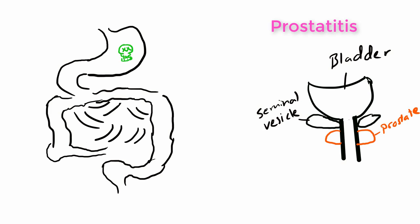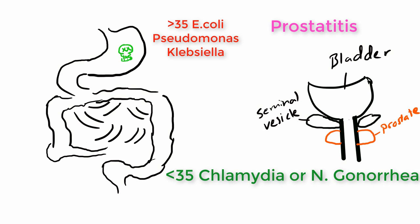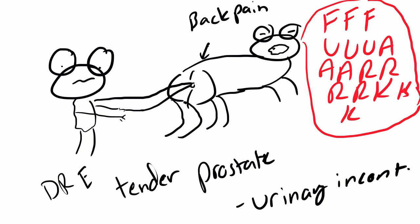Another thing it can cause is prostatitis, which is pretty rare for this organism. Exam-wise, you probably aren't going to see too much from this organism because it's usually age dependent for prostatitis. If they're less than 35, you want to think of Chlamydia trachomatis or Neisseria gonorrhoeae. If they're older than 35, then think of E. coli, Pseudomonas aeruginosa, or Klebsiella pneumoniae, but mainly E. coli. If they're less than 35, think of Neisseria gonorrhoeae. On presentation, they'll present with fevers and chills, lower back pain, and urinary frequency because the prostate is swollen. Once you do a digital rectal exam, they'll have a lot of tenderness around that area.